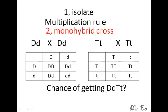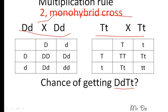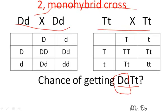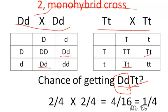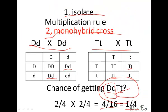Let's try a different one — this time for heterozygous for both traits. First, isolate: separate D and T. Then do a monohybrid cross for each. The chance of getting heterozygous Dd is 2 out of 4. The chance of getting heterozygous Tt is also 2 out of 4. Multiplying: 2/4 × 2/4 = 4 out of 16, which reduces to 1/4. So the chance of getting heterozygous for both traits is 1/4.